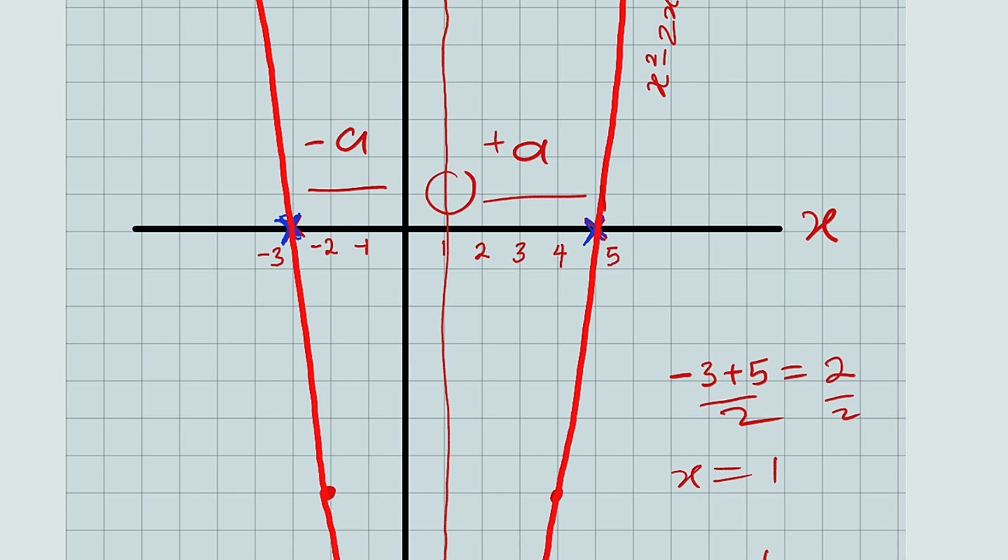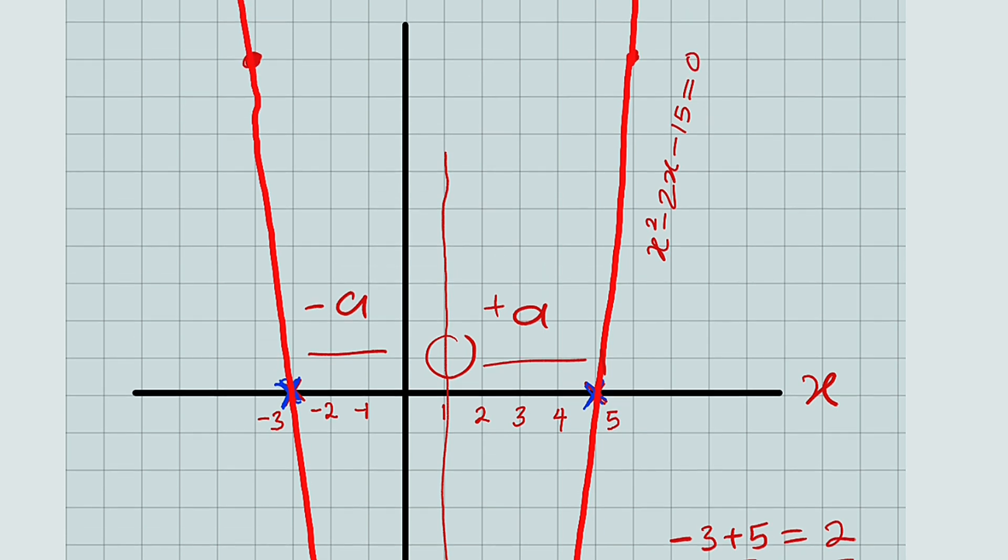So what Po-shen Loh did was to take the line of symmetry, which is 1, and add a, which is going to give the other root to the right-hand side. And if you take 1, which is the line of symmetry, and subtract a, it will give you the other root. So after this, you're going to multiply these two factors together, and you set them to be equal to the constant, which is negative 15. Solve for a.